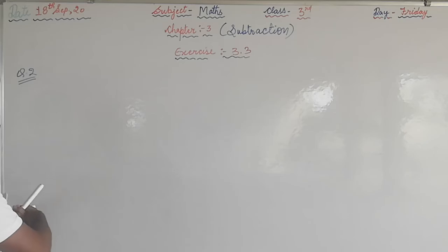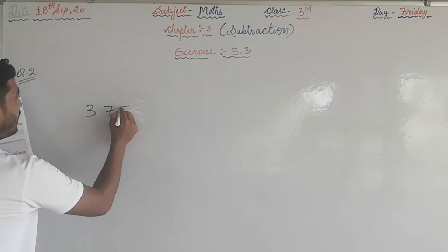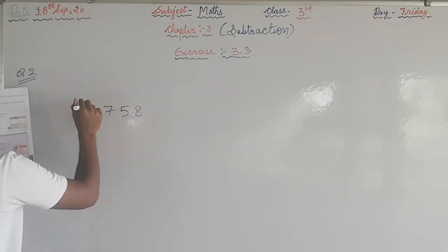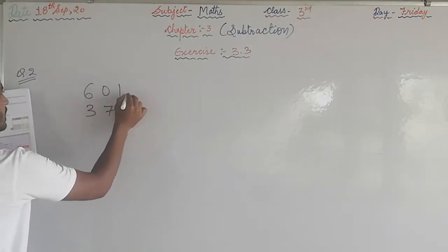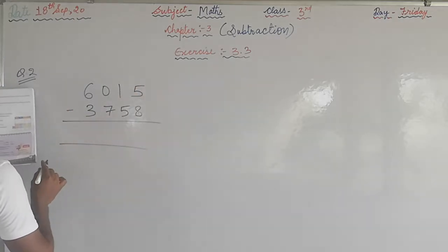According to Rasmi, she subtracted 3758 from 6015. What's the answer she got? She got 2357.